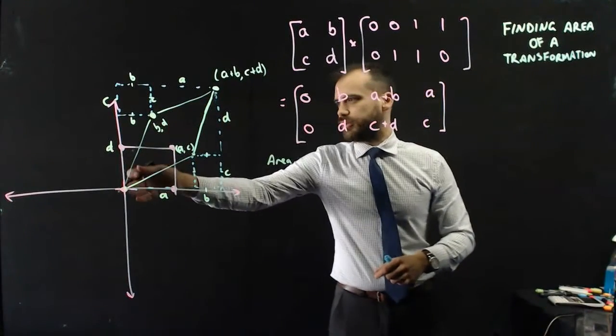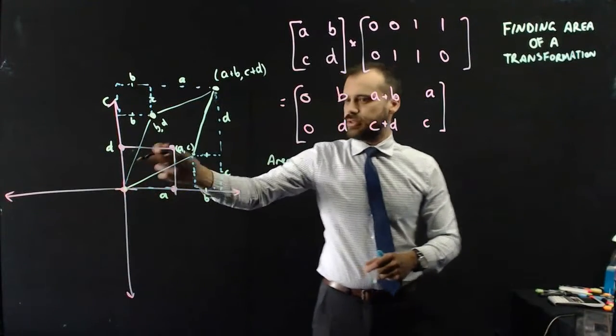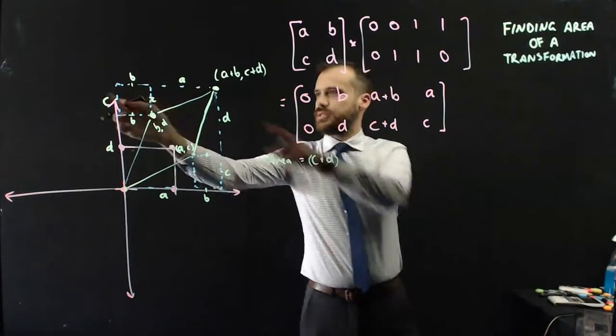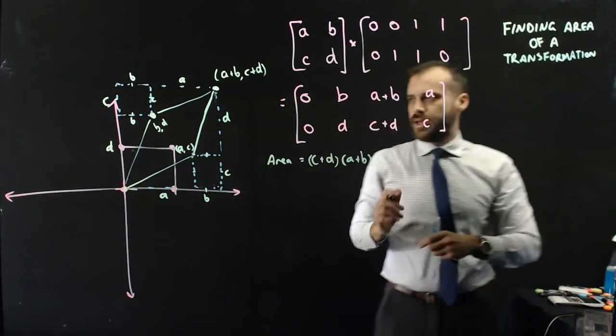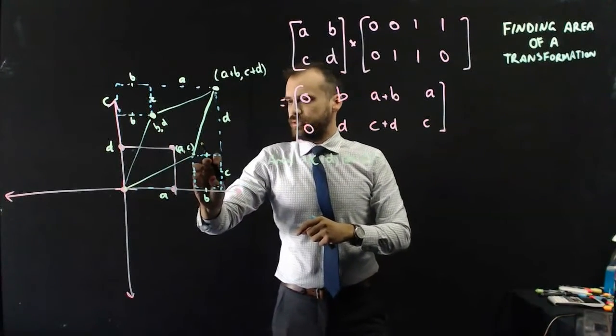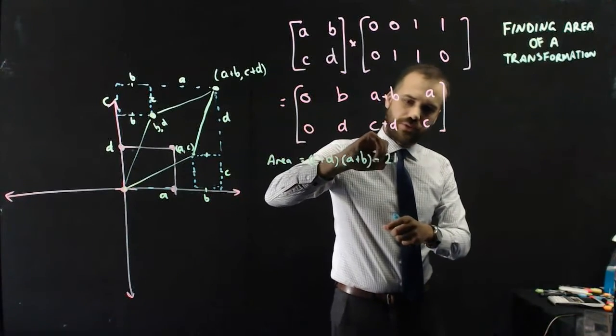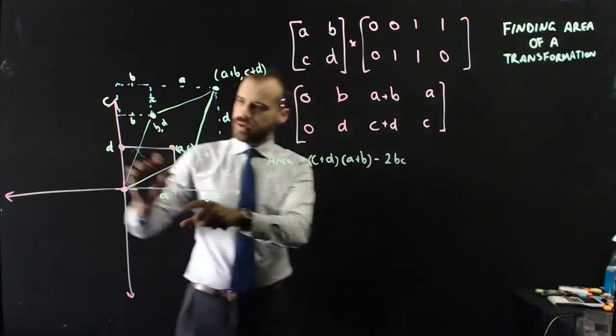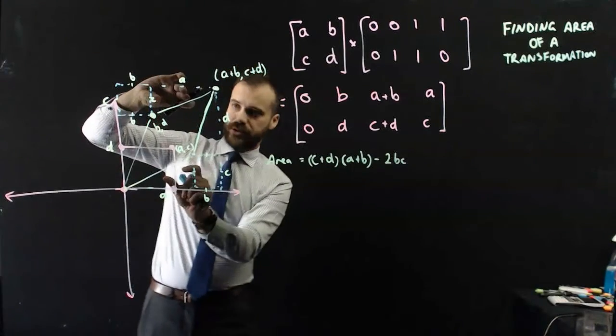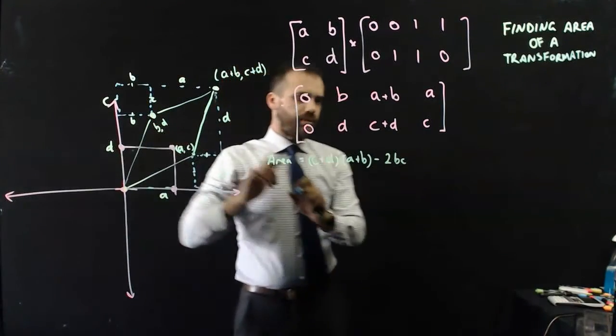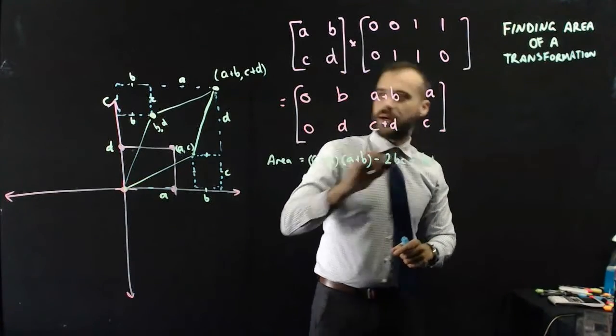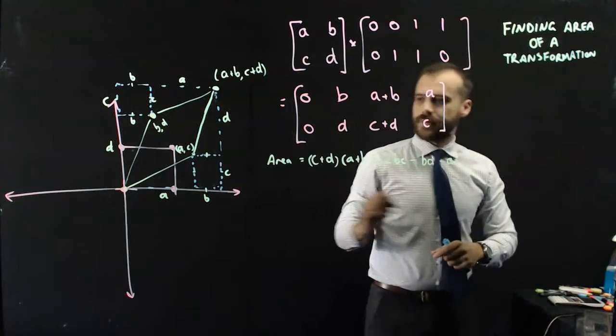And now we can find the area of our parallelogram. Now the easiest way for me to find this parallelogram is to do the entire rectangle, which is C plus D times A plus B. And now I need to subtract some bits. So I'm going to subtract this rectangle and this rectangle, which are both B, C. So minus 2BC. And now I can do subtracting four triangles, but actually if I put that triangle and that triangle together I'll get a rectangle. So I'm going to subtract the two rectangles now. One rectangle is B times D, and one rectangle is A times C.